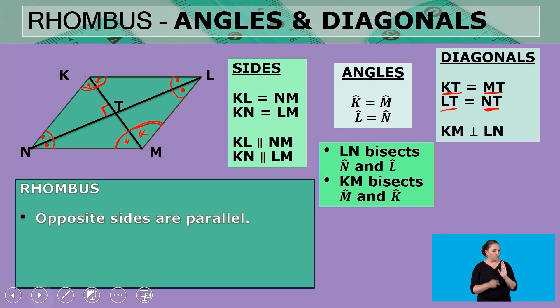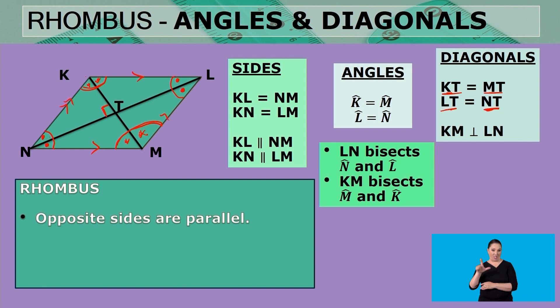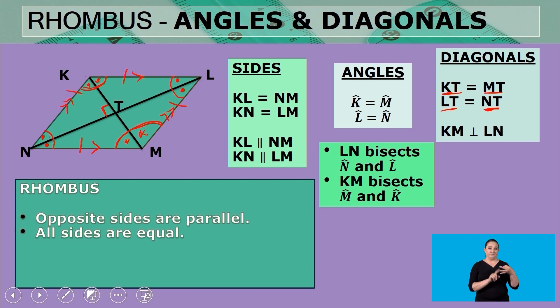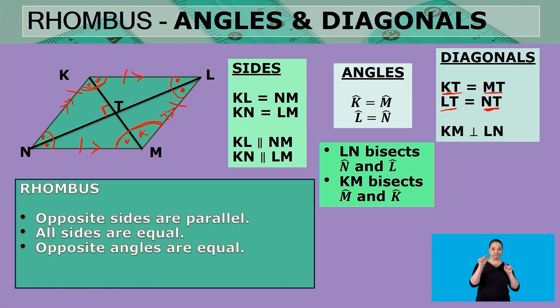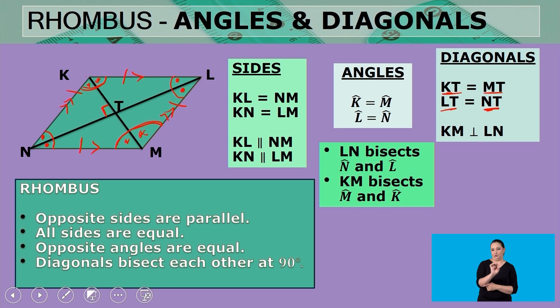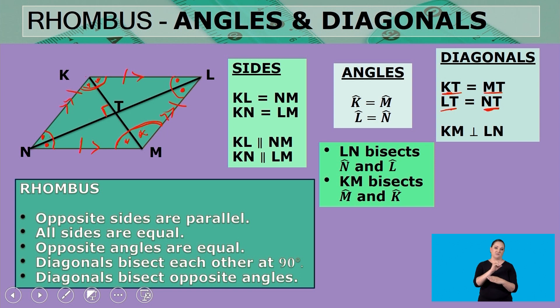To wrap up the properties of a rhombus: the opposite sides are parallel; all four sides are equal; opposite angles are equal; the diagonals bisect each other at 90 degrees — they not only cut each other in half but meet at right angles; and lastly, the diagonals bisect the opposite angles.